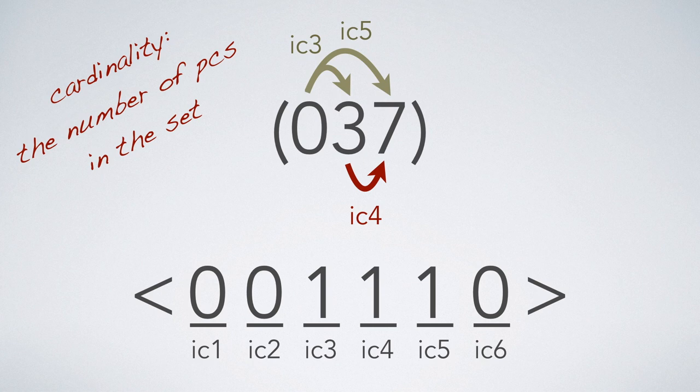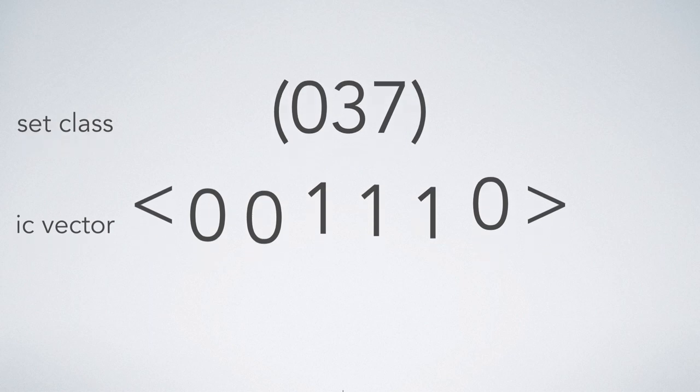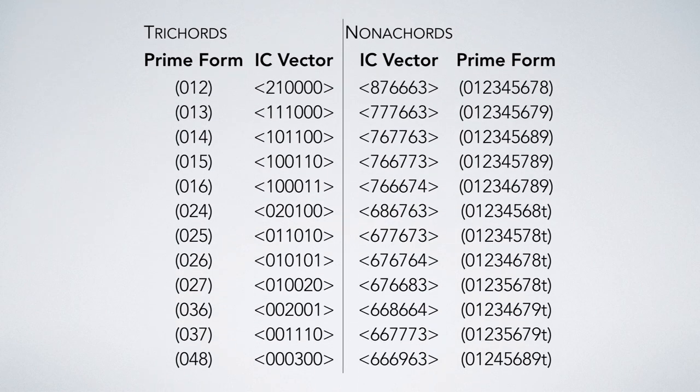We fill in the other placeholders with zeros since this set class contains no instances of interval classes 1, 2, or 6. Therefore, the interval class vector of 0, 3, 7 is 0, 0, 1, 1, 1, 0. We can also confirm our results by checking a set class list. And it appears we calculated the interval class vector correctly.